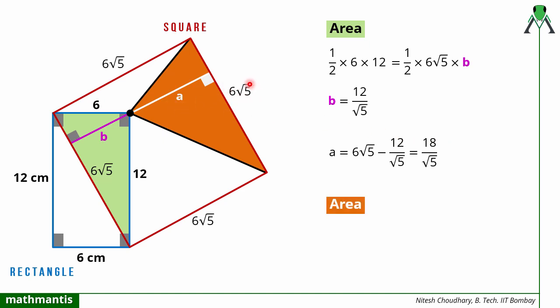half base that is 6 root 5 multiplied by height that is equal to a, that is 18 by root 5. And we can see that root 5 will get cancelled out. 2 threes are 6. So the area will come out to be 18 multiplied by 3 that is equal to 54.